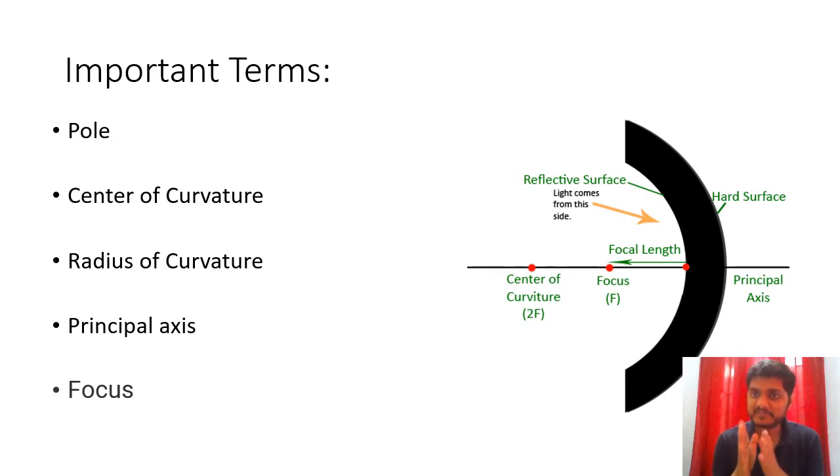It means the sphere from which the mirror is cut, the center of curvature is the center of that sphere. Radius of curvature is the radial distance between center of curvature and the pole. And the principal axis is the straight line which connects center of curvature to the pole. And the focus, focus is a special point on which all the rays which are parallel to principal axis gets reflected through.